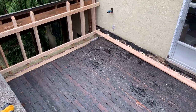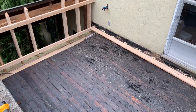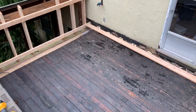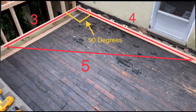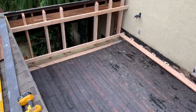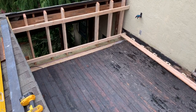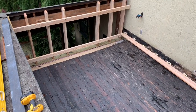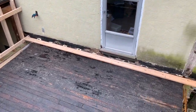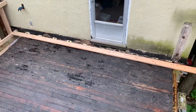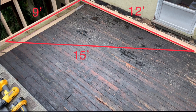We're going to use something called a 3-4-5 triangle to determine whether or not this is square. By the Pythagorean theorem, any triangle that has three units on the A side and four units on the B side will have five units on the hypotenuse. So this triangle will have nine feet on the A side (three times three), twelve feet on the B side (three times four), and should have fifteen feet on the hypotenuse (three times five).